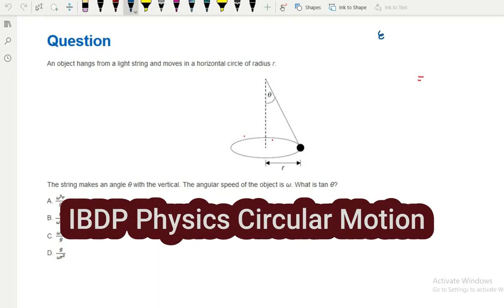Hello, this is an IB Physics question about mechanics. An object hangs from a light string and moves in a horizontal circle. We're talking about circular motion.